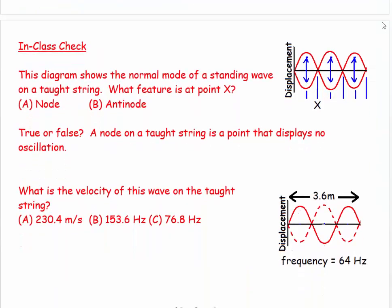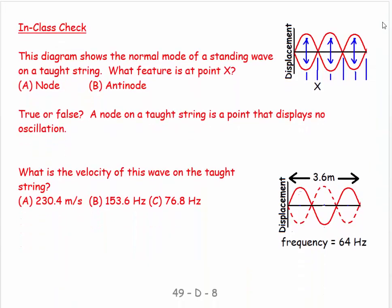So let's have a look at some questions on this. This diagram shows the normal mode of a standing wave on a taut string, what is the feature at point X? And point X is pointing to this point here, which is a node. So be able to recognize where the nodes are and where the antinodes are. And know what those terms mean.